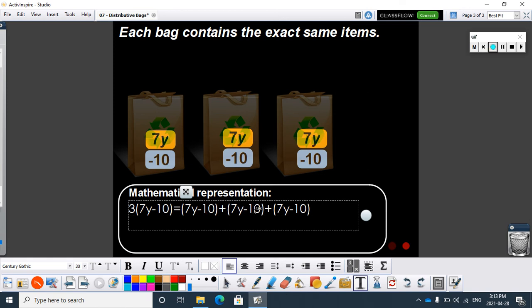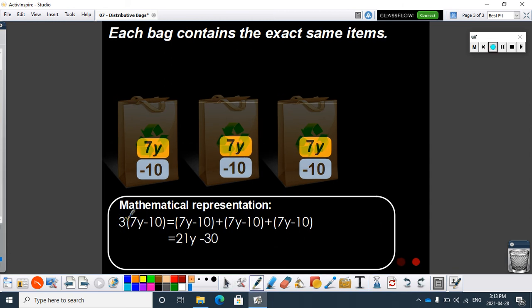We want, okay, so 7y and another 7y and another 7y - that's 21y. And then negative 10 subtract another 10 subtract another 10 is negative 30. But the distributive property says we could have got there by taking this 3 and multiplying it by the 7y to get the 21y, and then the 3 multiplied by negative 10 to get negative 30, which we write as subtract 30.